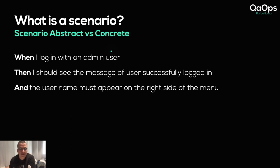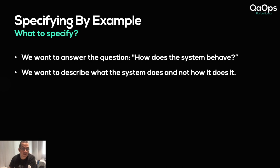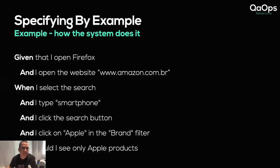So how can we specify better? What to specify: we want to answer the question 'how does the system behave?' We want to describe what the system does, not how it does it. Here's an example of describing how the system does it — a very step-by-step approach: Given I open Firefox, when I open the website amazon.com.br, when I select the search and type 'smartphone' and click the search button and click on Apple in the brand filter, then I should see only Apple products. This is a testing script approach and it's not what you want.